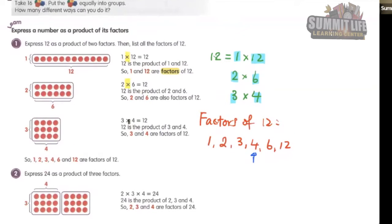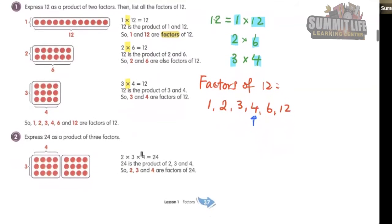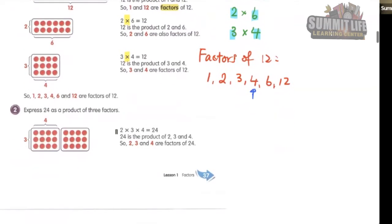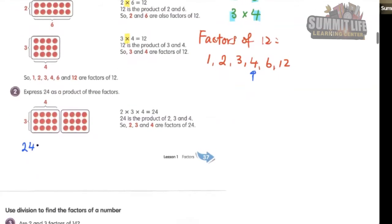So for 24, we can have factors 2, 3, and 4, because 24 can be formed by 1 times 24, then 2 times 12, then 3 times 8, then 4 times 6. 5 is not — we cannot have 5 times something to get 24. So 5 is not, and after 5 we go back to 6, so it is repeating. We can stop here.